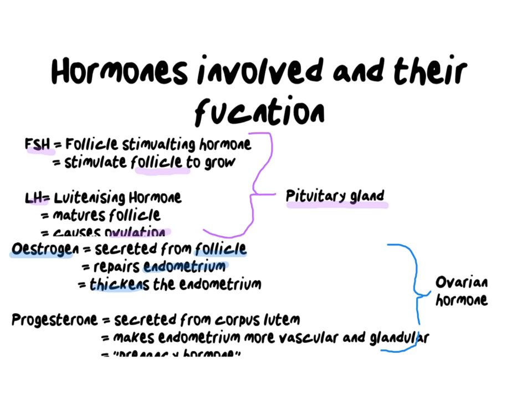Just like FSH and LH are sister hormones, estrogen also has a sister hormone: progesterone. Progesterone is also secreted out of the ovary, but it comes from a structure called the corpus luteum. The corpus luteum used to be the follicle that secreted estrogen, but once the follicle is empty, it shrivels and becomes the corpus luteum. The corpus luteum makes the endometrium more vascular — meaning more veins and arteries — and more glandular, meaning more glands.